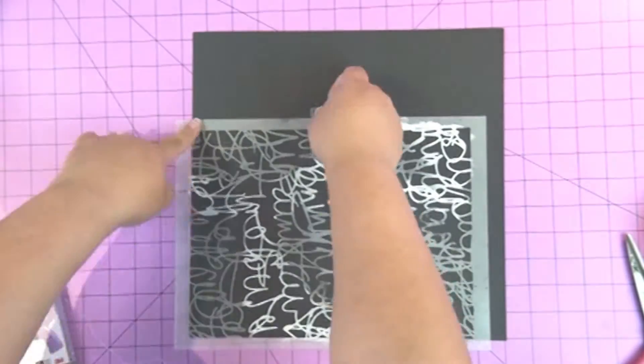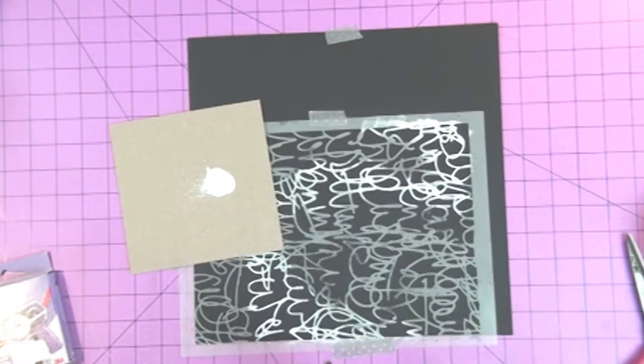Here's how to create a graffiti effect on your scrapbook pages. I'm Jennifer Priest and we're going to use a Stencil Girl stencil today called Scribble Scratch. The first thing you're going to do is tape it down in place with some washi tape.